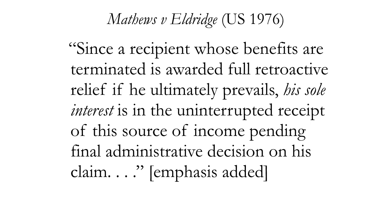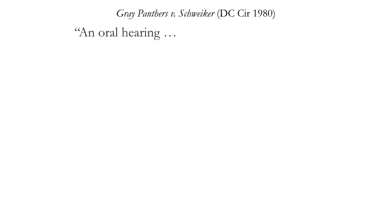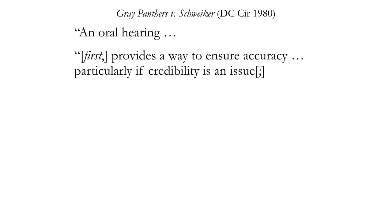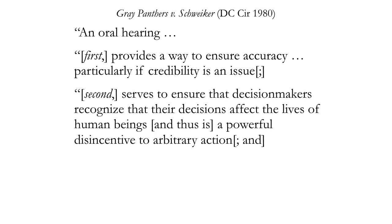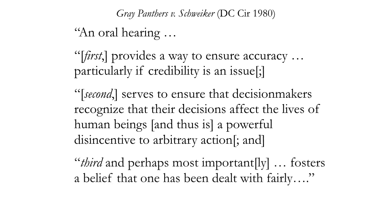Contrast the D.C. Circuit's inventory of values served: an oral hearing provides a way to ensure accuracy, particularly if credibility is an issue; it serves to ensure that decision-makers recognize that their decisions affect the lives of human beings and thus is a powerful disincentive to arbitrary action; and third, and perhaps most importantly, it fosters a belief that one has been dealt with fairly. Great Panthers may still be good D.C. Circuit law, but it is not the law of the land. Matthews is.